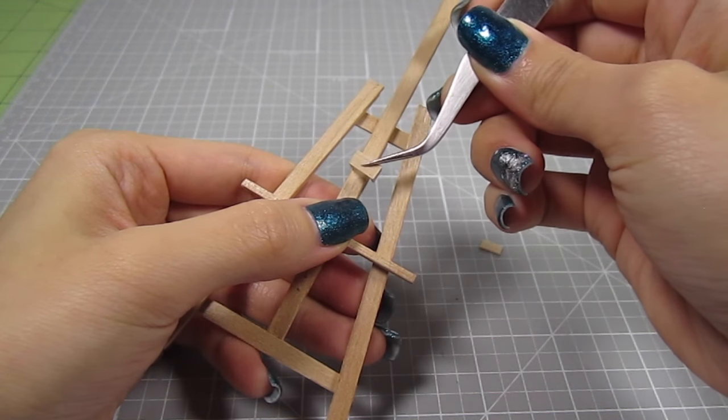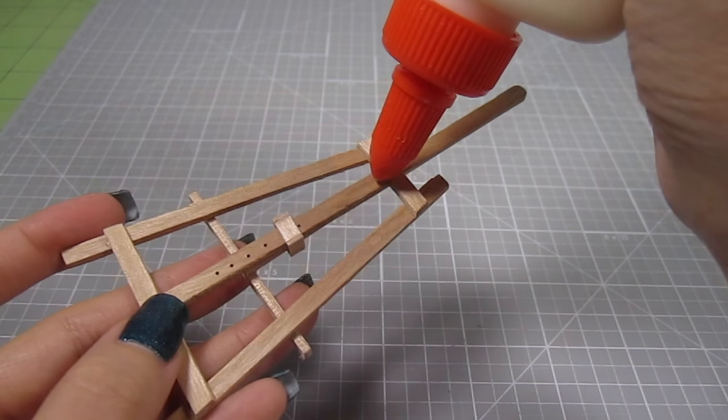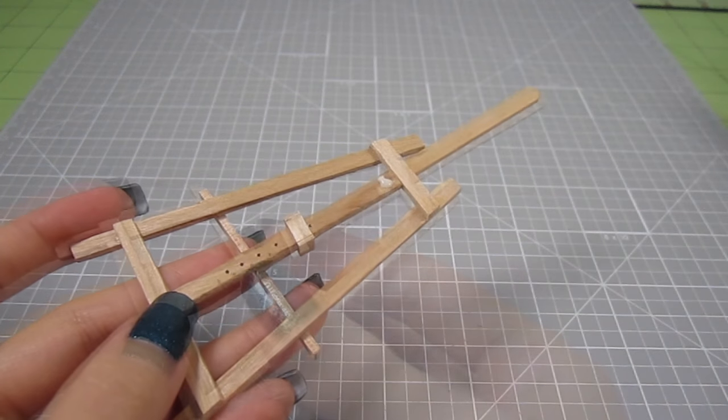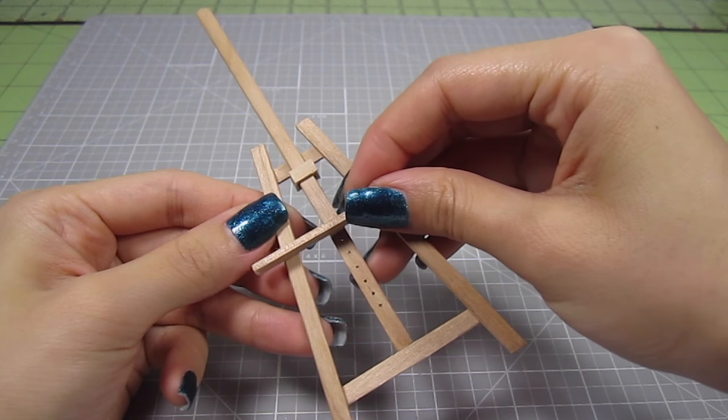Once it dries, add it to the middle section of the easel. Then close the back with that last piece of coffee stirrer. I'm going to glue this piece down, so add a drop of wood glue to the back of the middle piece and slide the contraption onto it. When that dries, you should be able to slide that piece up and down easily.